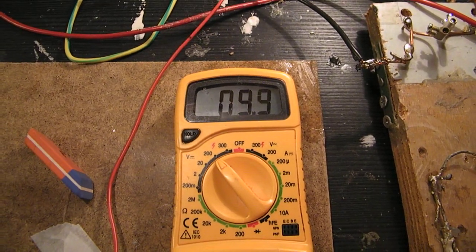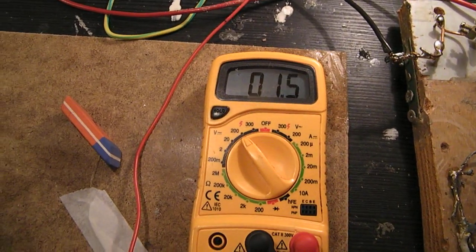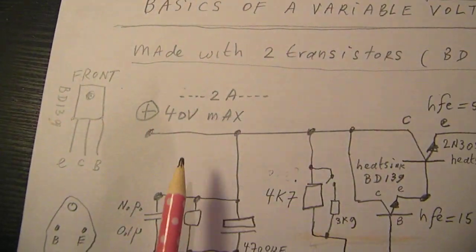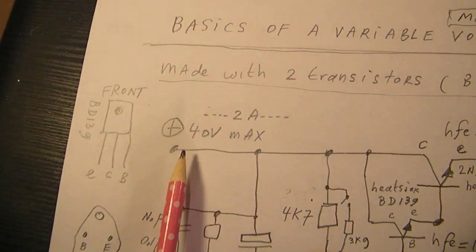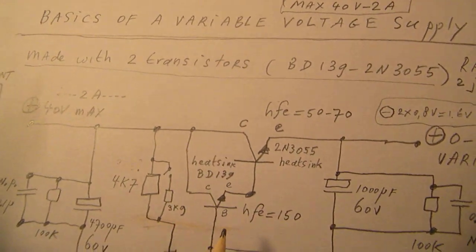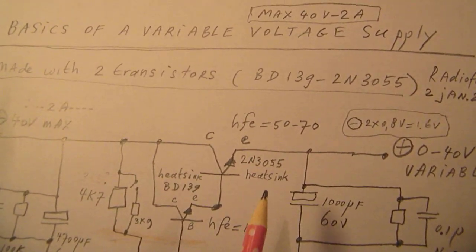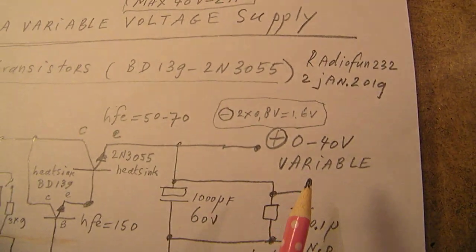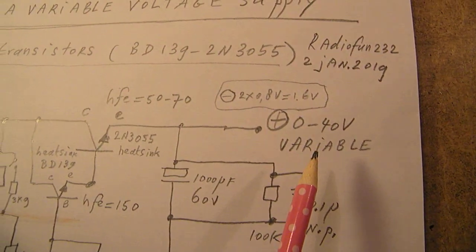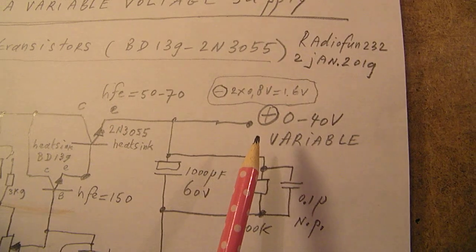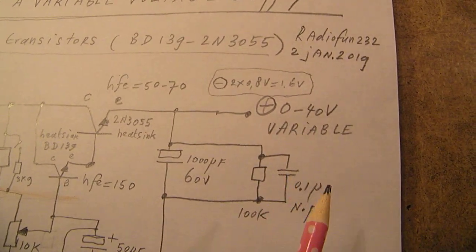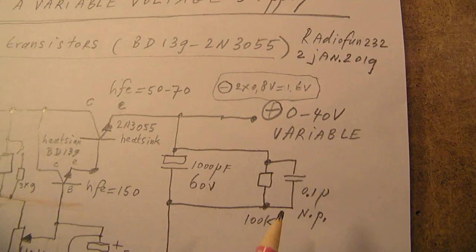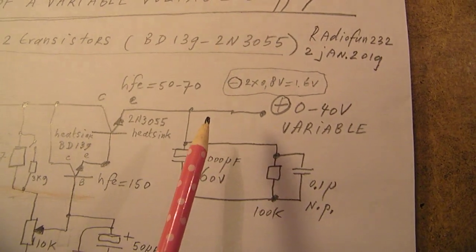So it will surely go to the maximum voltage that the input can give, 40 volts maximum. Of course, there is a voltage drop here, 2 times 0.7 or 0.8 volts. But you can get out surely 0 to 40 volts variable with a good current, say 1 ampere or half an ampere.